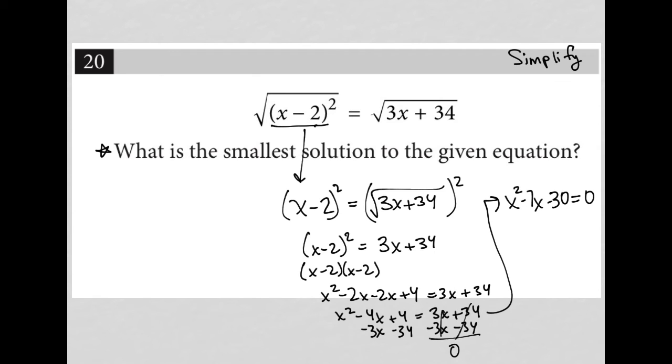I would then have this trinomial that I can factor. What are two numbers that multiply together to equal negative 30 but add up to negative 7? Well, that would be negative 10 and positive 3. So this trinomial would factor to a product of two binomials, and they would be x minus 10 and x plus 3 equals 0.